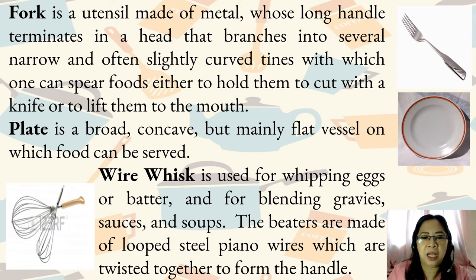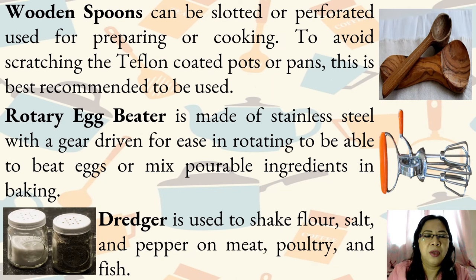Plate is a broad, concave, but mainly flat vessel on which food can be served. Wire whisk is used for whipping eggs or butter and for blending gravies, sauces, and soups. The beaters are made of loop-steel piano wires twisted together to form the handle. Wooden spoons can be slotted or perforated, used for preparing or cooking. To avoid scratching the Teflon-coated pots or pans, wooden spoons are best recommended.